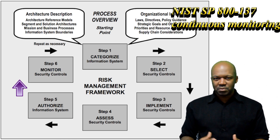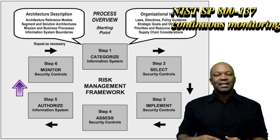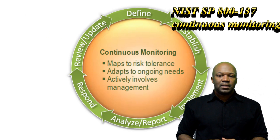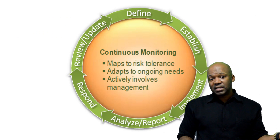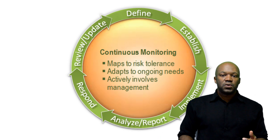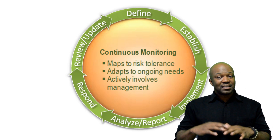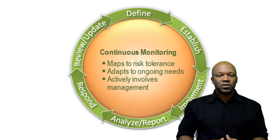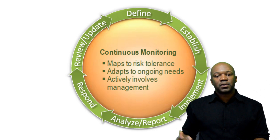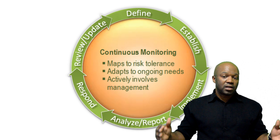The final step is continuous monitoring. Continuous monitoring is making sure that your system, once approved, stays at a certain security posture. That means if there are new threats to your system, you respond to them. If there are new vulnerabilities, you patch them. If there are new components that need to be added, you add them — but it has to be at the same level of risk accepted by the authorizing authority so there are no big gaping holes in your system. Basically, throughout the life cycle of your system, it maintains the same level of risk it started off with.